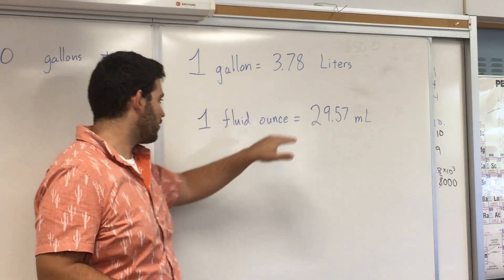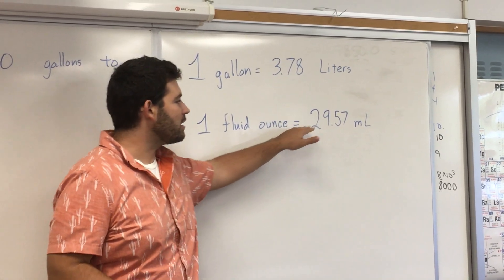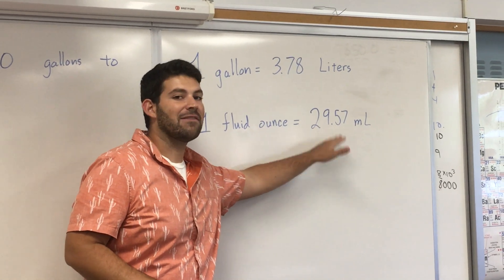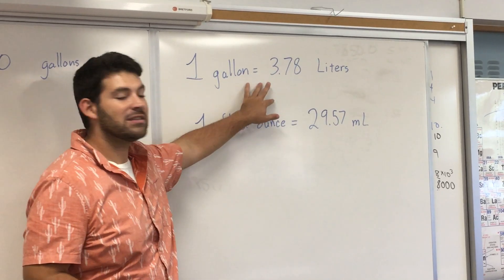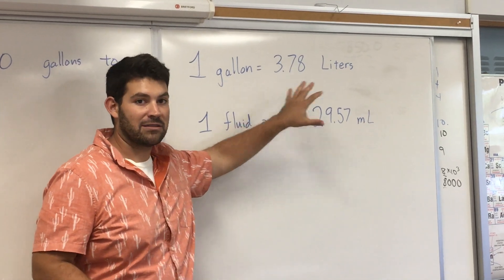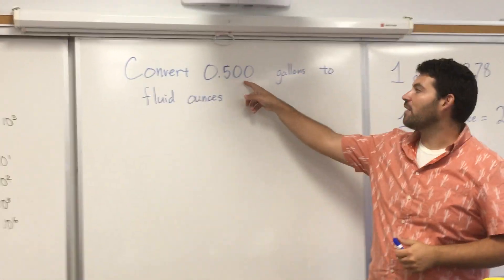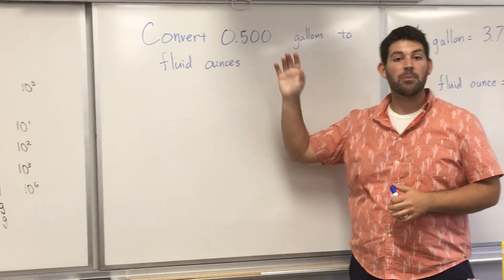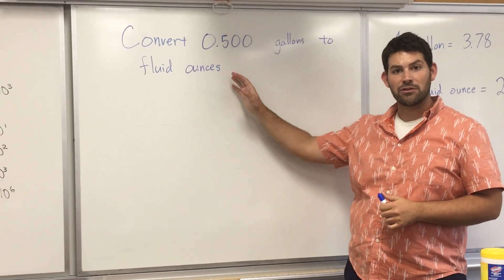That's an equivalence factor. One fluid ounce equals 29.57 milliliters. So these two pieces of information are crucial. They would be given to you. You're not memorizing stuff like this. So again, we're converting 0.500 gallons to fluid ounces. You might want to pause for a second and try this one on your own.